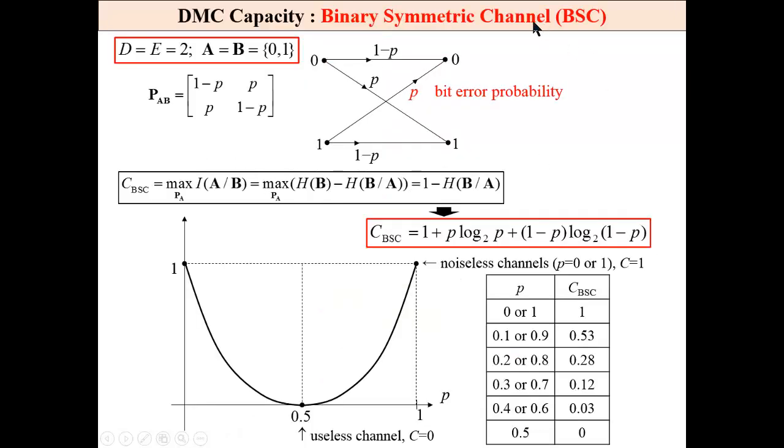This is binary symmetric channel characterized only by one probability, bit error probability, same alphabets at the input and at the output 0, 1, 0, 1. It is easy to find that a formula for channel capacity is like that. And this is the plot. For p equals 0.5, we have useless channel, its capacity is zero. For p equals 1 or 0, we have a noiseless channel and its capacity is 1.